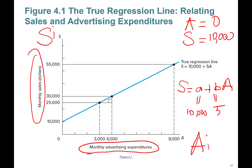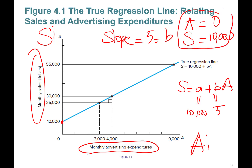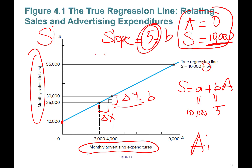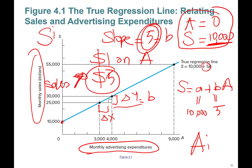The slope of this line is five — that's beta. Slope is calculated as ΔY/ΔX. This translates to: if I spend one dollar on advertising, my sales will increase by five dollars. That's a great impact. This is the true relationship we don't know, but we have data on it.